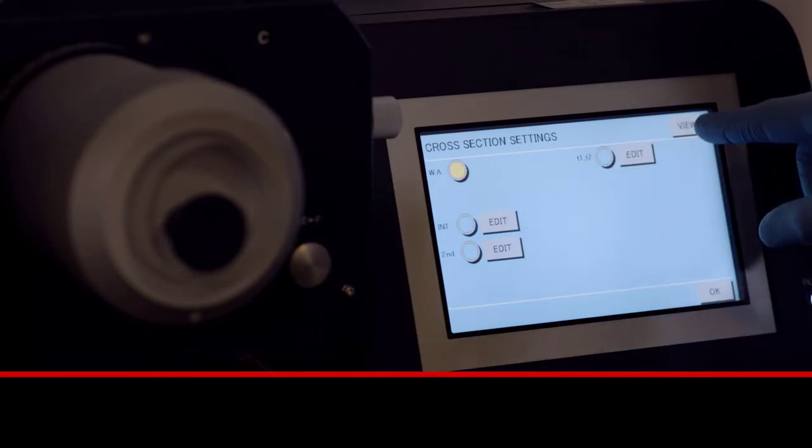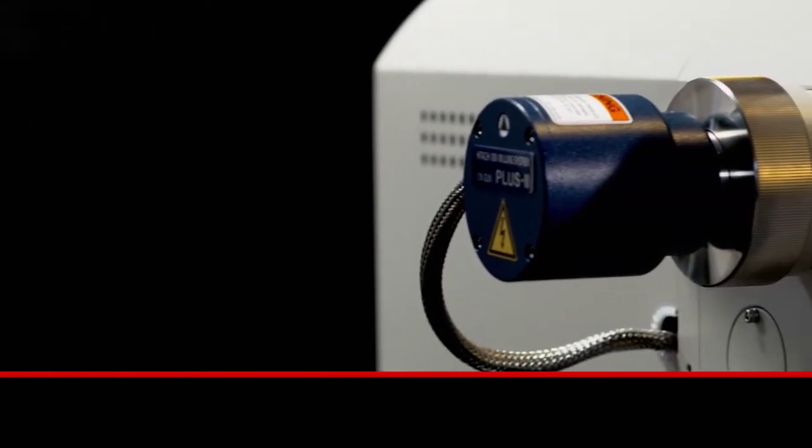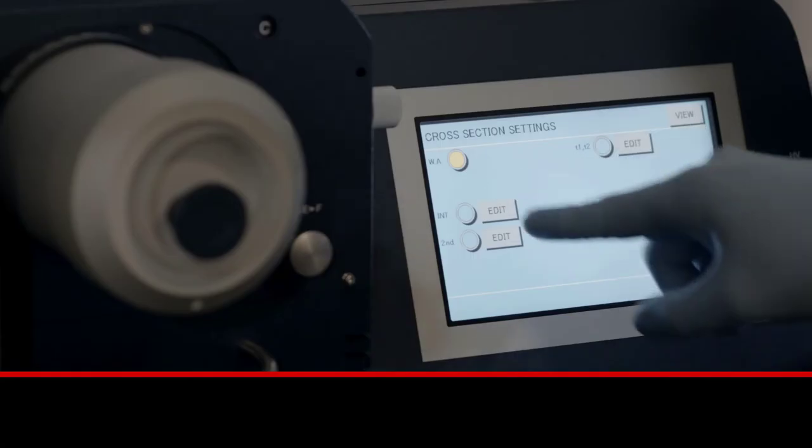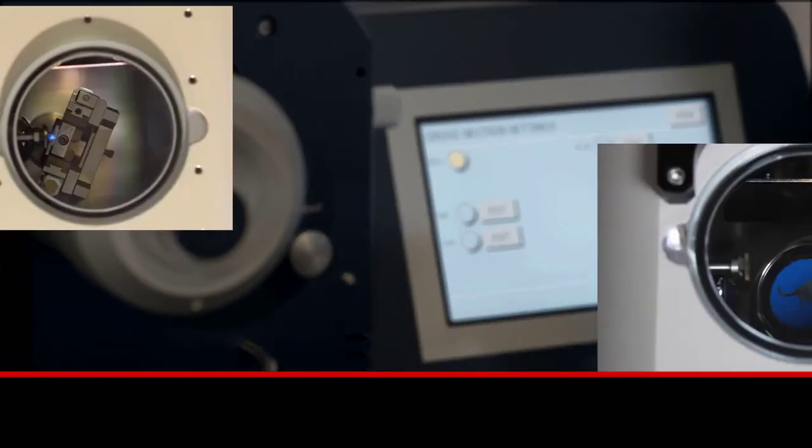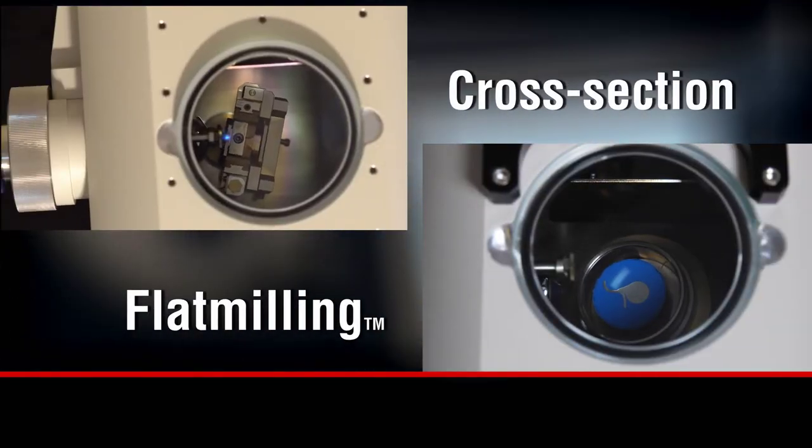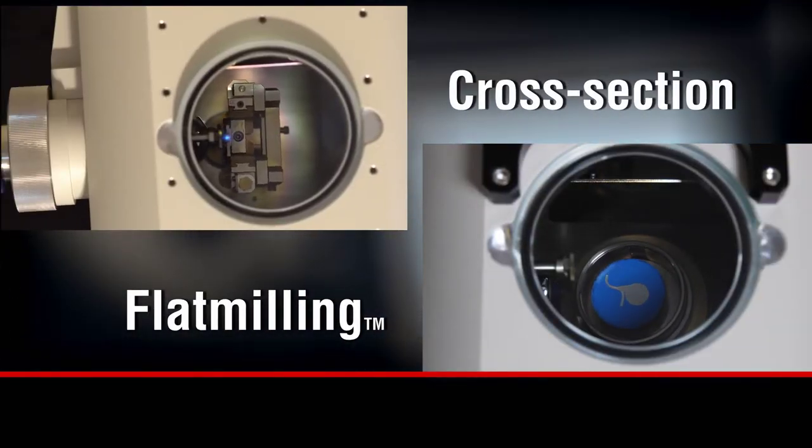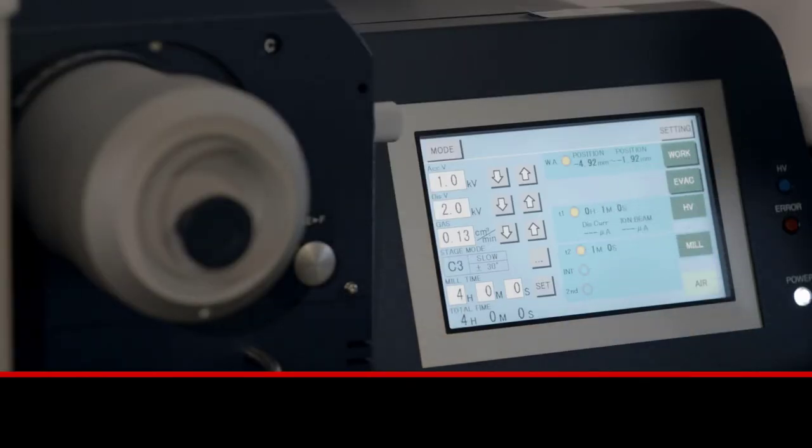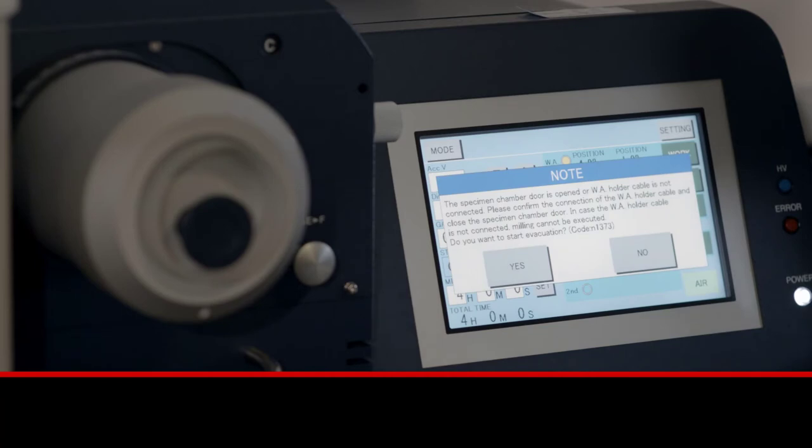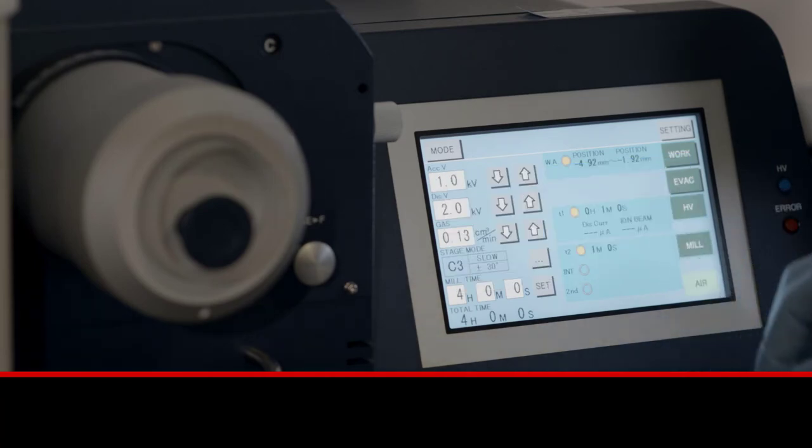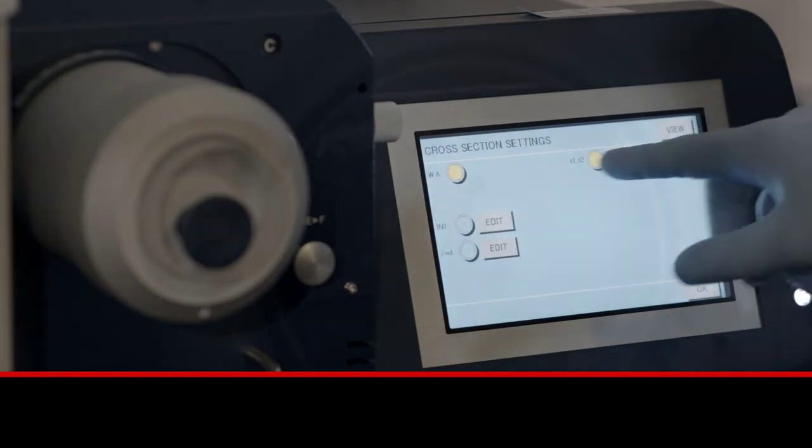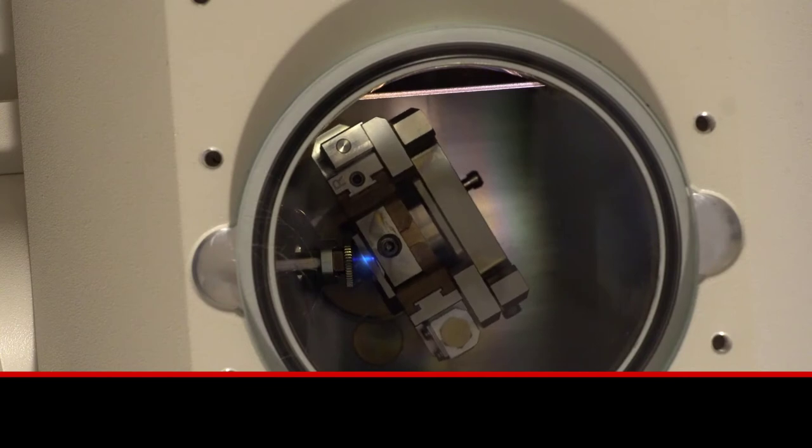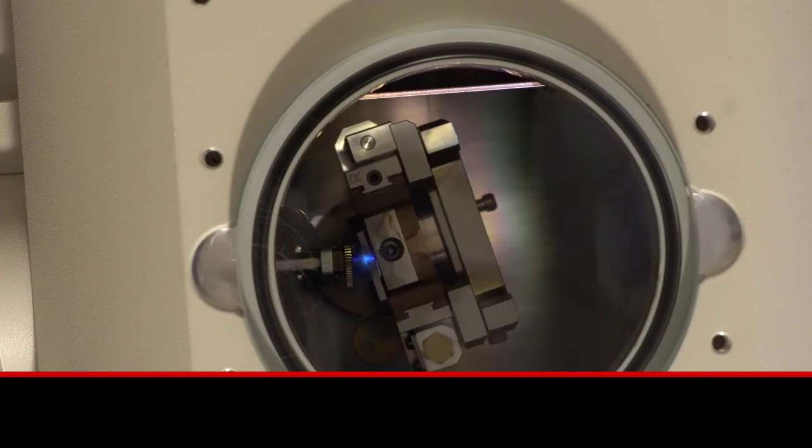The plus 2 argon ion gun design of the ArBlade 5000 allows it to reduce cross-section processing time with an industry-leading guaranteed high milling rate on every system of 1000 microns, doubling throughput. Yet energy levels can vary to less than 1 kV for sensitive materials with improved beam density to effectively mill away mechanical artifacts with less thermal ion damage than ever before.